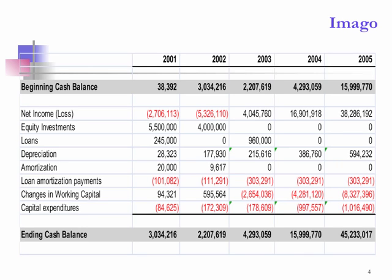This is an analytical instrument company called Imago Scientific, a Midwest-based company. Let's focus on 2001. You can see they had a beginning cash balance on January 1, 2001 of $38,000, and at the bottom of 2001 they had just over $3.034 million in cash on hand. In between, you can see the various changes to cash flow, including equity investments and loans.